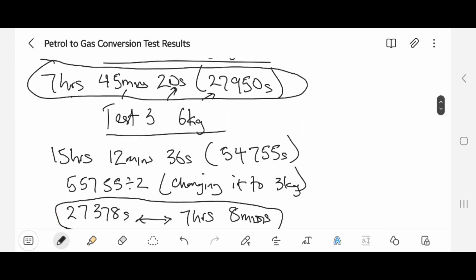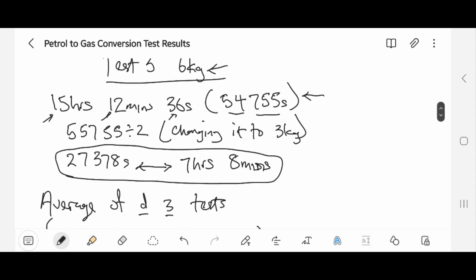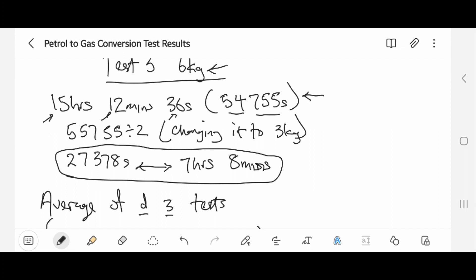For Test 3, I used 6kg gas. I don't know, I just felt like probably 6kg would give me more duration. Obviously, I got more duration: 15 hours 12 minutes 36 seconds, which converts to 54,755 seconds. For my test to be the same all through, I changed this to 3kg, which means I will divide my duration by 2. So 54,755 divided by 2, changing to 3kg gas, I got this. Translating it to hours, I got 7 hours 8 minutes.